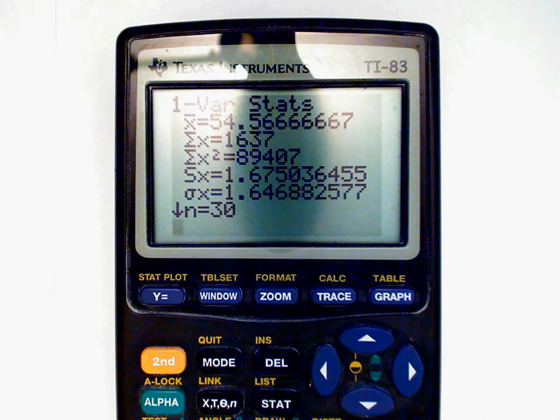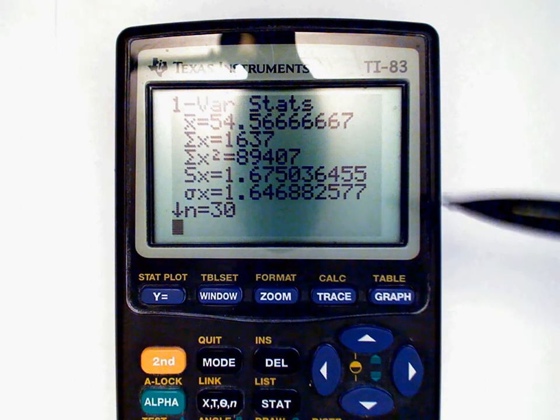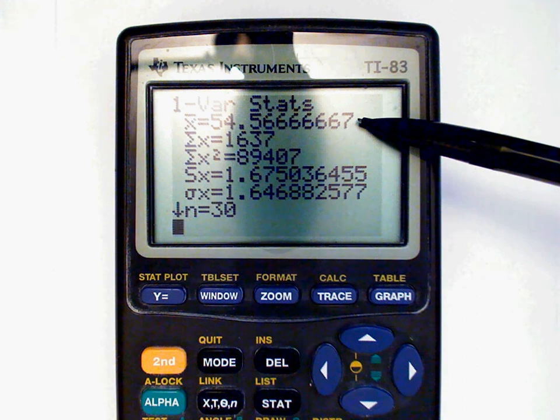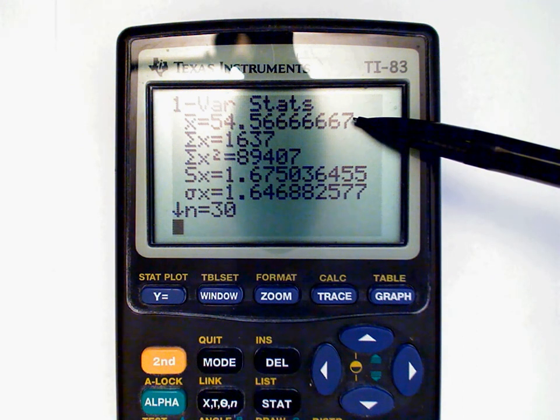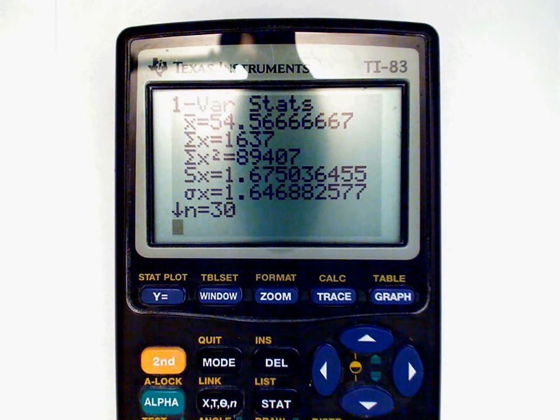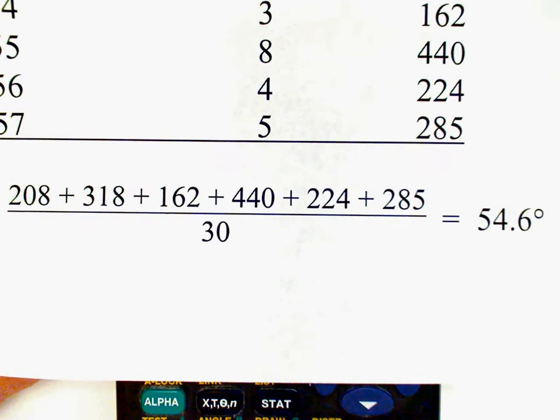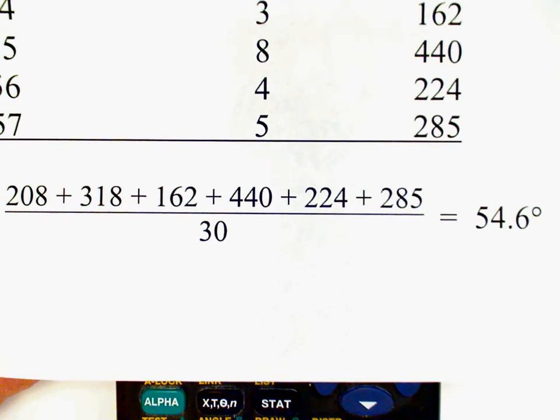And you get a bunch of numbers here. And notice that the top number here says X bar. And that's what we're interested in. So our mean for this data set is 54.56. Rounded off would be 54.6. And that's exactly the value that we got in calculating this by hand.